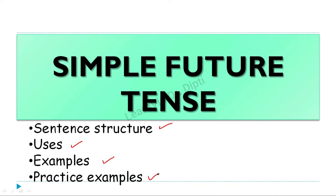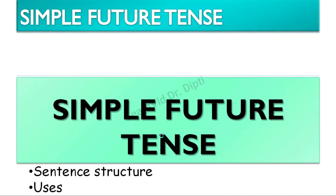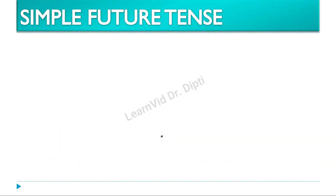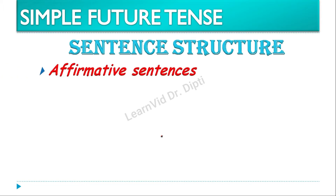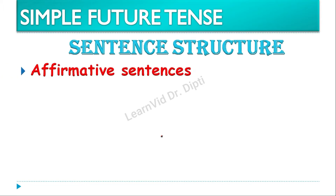Now let us see first its sentence structure. In sentence structure, three types of sentences can be framed. The first sentence structure is the affirmative sentences, then second is the negative sentences, and the third one are the question sentences or interrogative sentences.